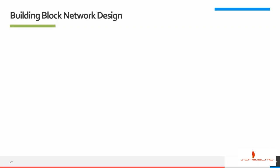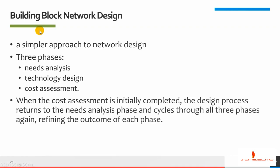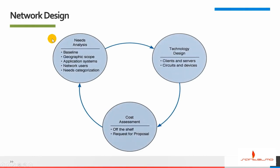The basic network design process involves three steps that are performed repeatedly: needs analysis, technology design, and cost assessment. This process begins with needs analysis, during which the designer attempts to understand the fundamental current and future network needs of various users, departments, and applications. This is likely to be an educated guess at best. Users and applications are classified as typical or high volume, and specific technology needs are identified. The next step is technology design, which examines available technologies and assesses which options will meet users' needs. The third step is cost assessment, where the relative costs of the technologies are considered.